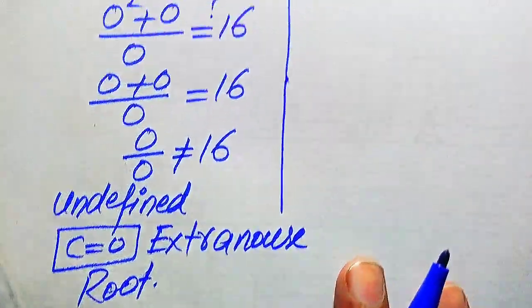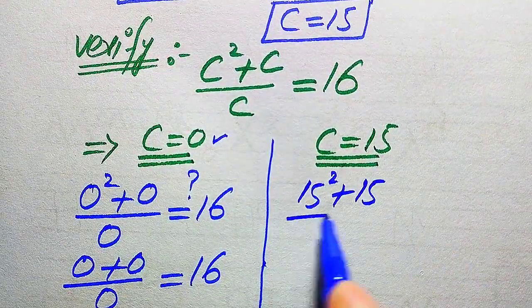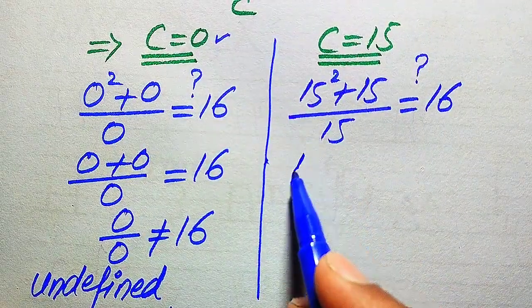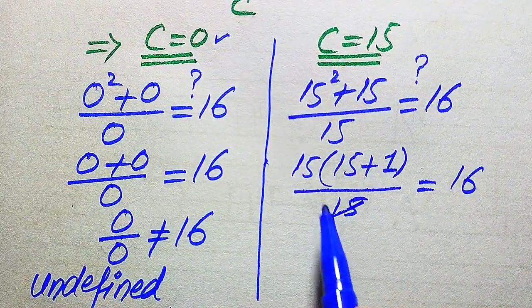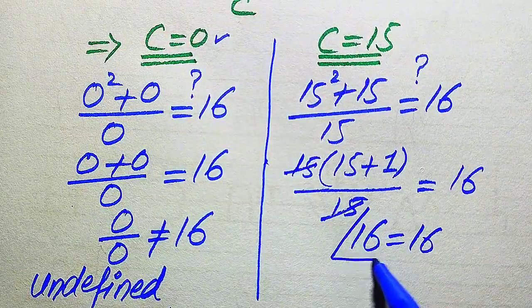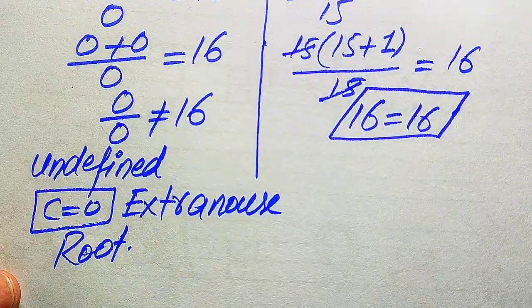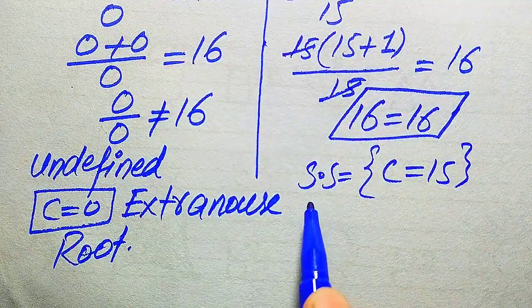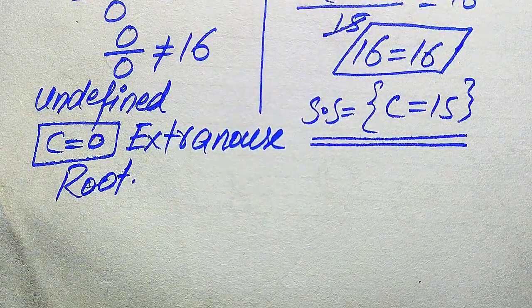Now we substitute c = 15 into the left-hand side: (15² + 15)/15. We factor 15 from the numerator to get 15(15 + 1)/15. The 15 cancels, leaving 15 + 1 = 16, which equals 16. Both sides are equal, so c = 15 satisfies the equation. The solution set is {15}, and c = 0 is the extraneous root. This is the conclusion of Method 1.